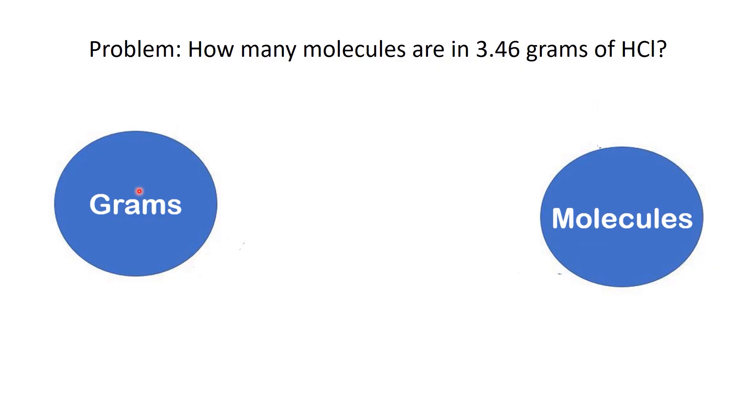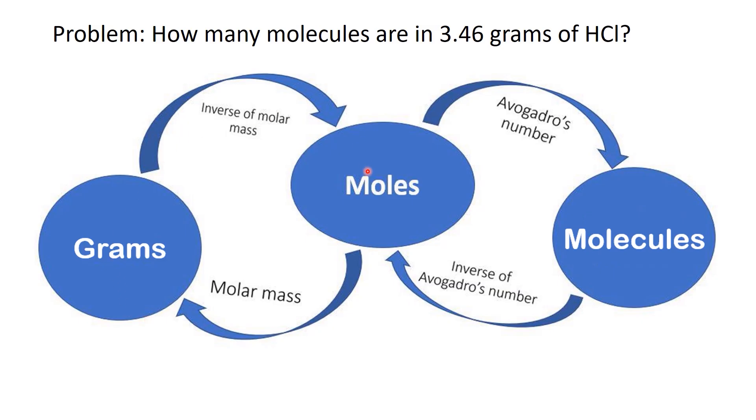To find out, we'll need to convert grams into molecules. And we'll do that in two simple steps. Step 1: Convert grams into moles using the molar mass of HCl. Step 2: Convert moles into molecules using Avogadro's number.